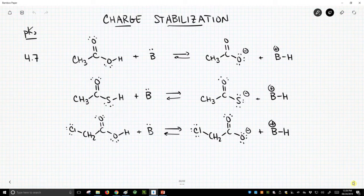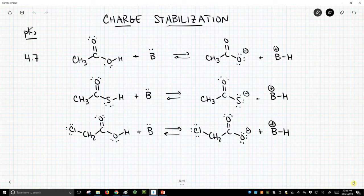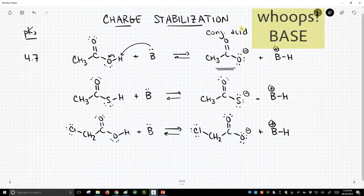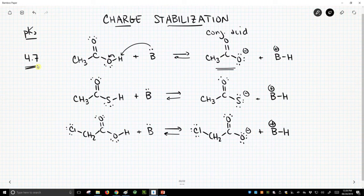On top of the screen, we have acetic acid, and it is reacting with a base. It's reacting as an acid. It's being deprotonated to form this charged conjugate base, and the pKa for this particular reaction is 4.7. This indicates our acid is a moderate acid.